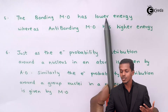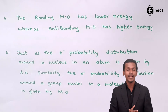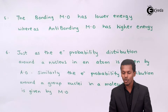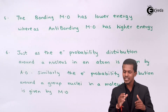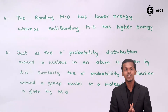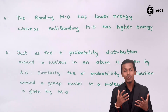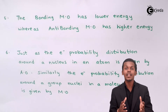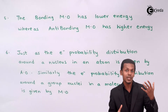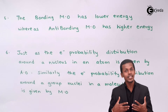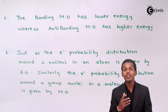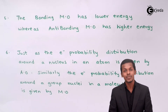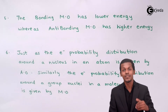The fifth postulate states that the bonding molecular orbital has lower energy whereas the anti-bonding molecular orbital has higher energy. Molecular orbitals with lower energy are more stable — lesser the energy, more is its stability. For the anti-bonding molecular orbital, more energy means lesser stability. This also gives us insight into why some molecules are more stable in their molecular form compared to their atomic state.